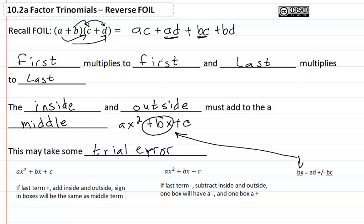When we look at ax² + bx + c, if the last term is positive, we're going to add the inside and outside terms. The sign in the boxes will be whatever the middle term is. If we had ax² - bx + c, then we would have negative in our boxes.